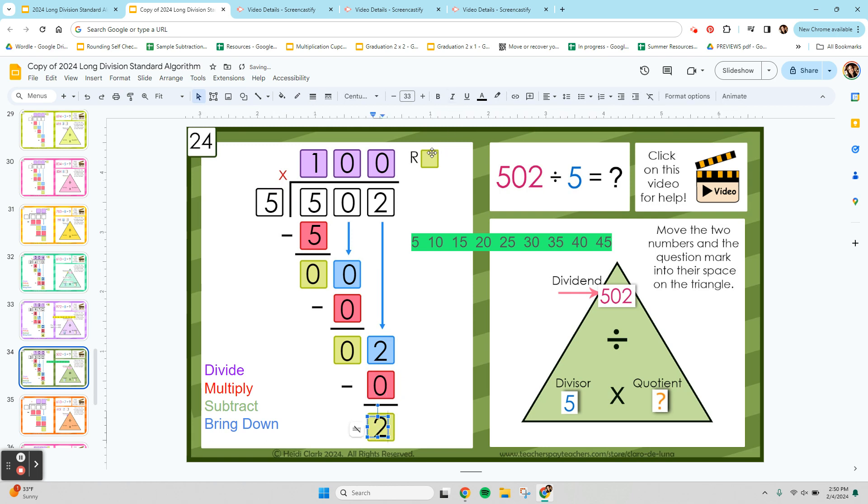You got 2 left over. So if you had 502 pennies, and you made 5 groups, each group would have 100 in it. And then you'd have 2 pennies left over that didn't divide up. And that makes sense, because 5 times 100 is 500. So 5 times 100 plus 2 is 502.